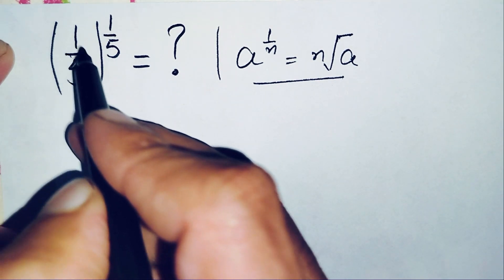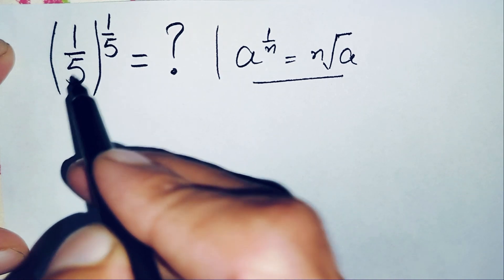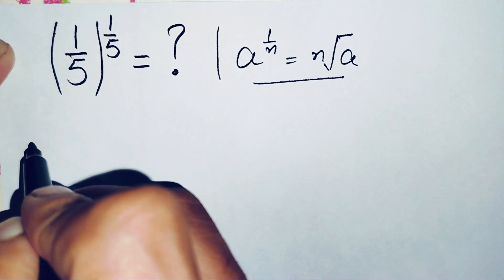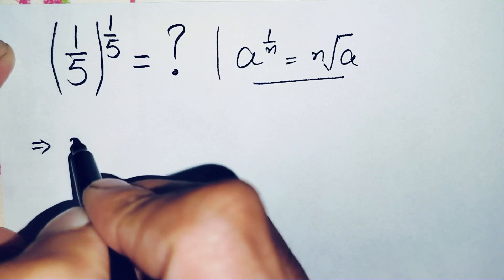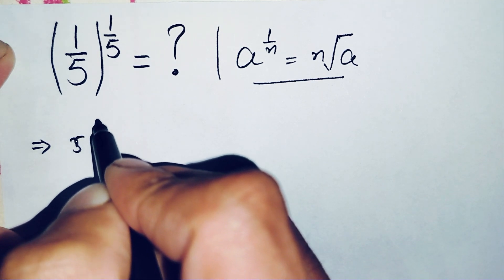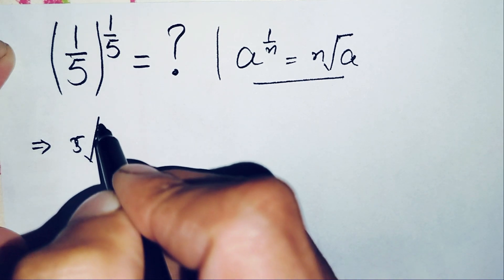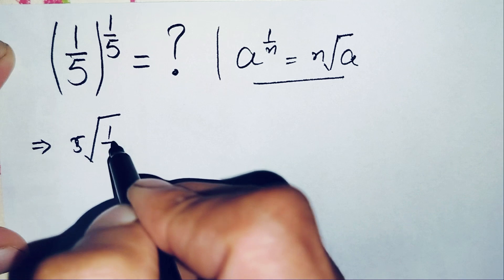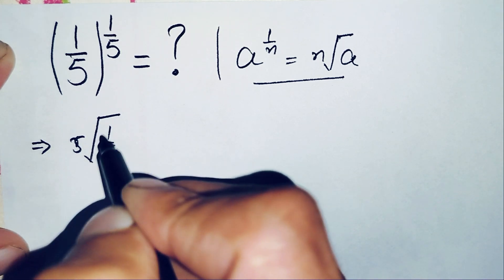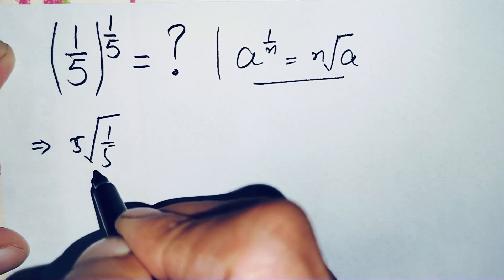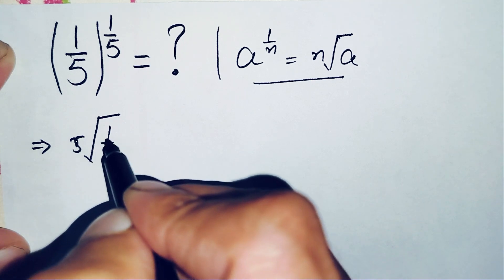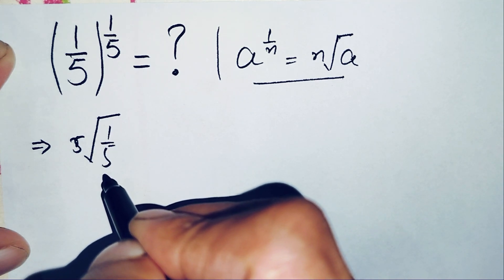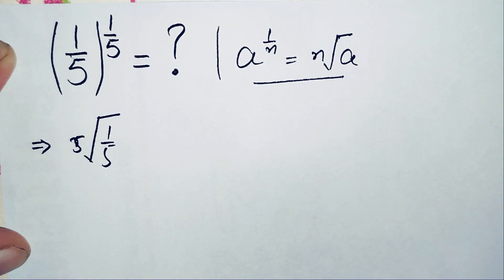Using this exponential square root property, here a is 1 over 5 and n is 5, so this will become the fifth root of 1 over 5. Now we will spread this fifth root over the numerator and denominator.